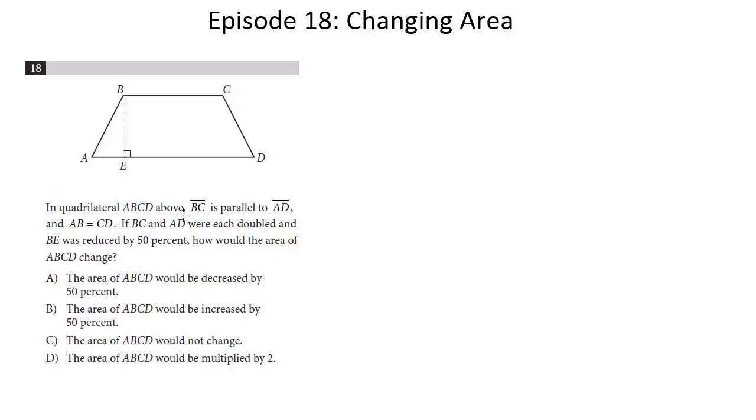In quadrilateral ABCD above, BC is parallel to AD, and AB equals CD. If BC and AD were each doubled and BE is reduced by 50%, how would the area of ABCD change?